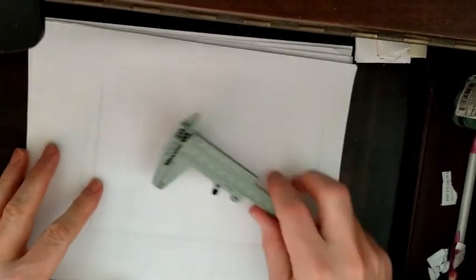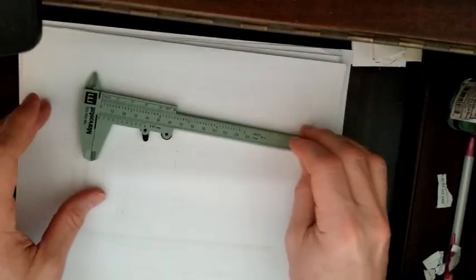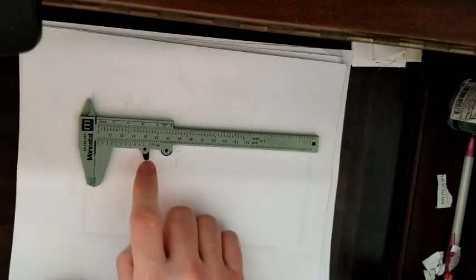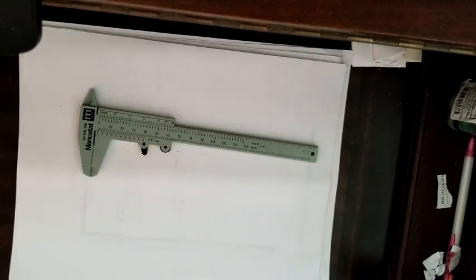Here's a lesson on how to use the vernier caliper. This is a vernier caliper that allows you to measure down to 0.05 millimeters, to the nearest 0.05 millimeters.